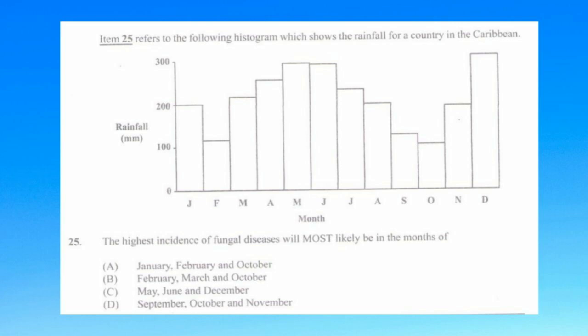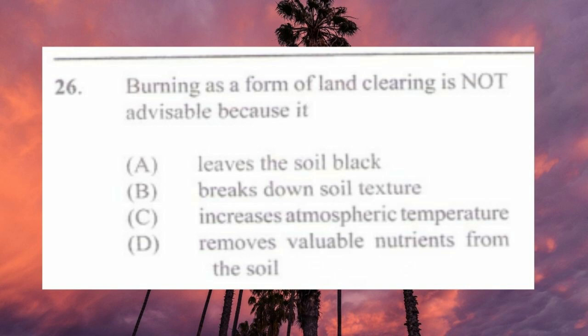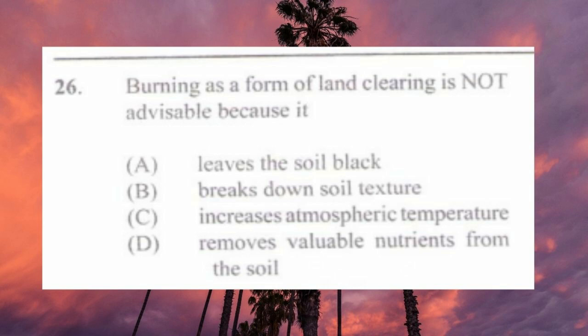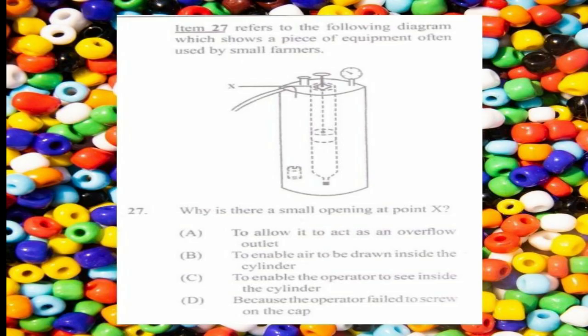Question number twenty-six: burning as a form of land clearing is not advisable because it a) leaves the soil black, b) breaks down soil texture, c) increases atmospheric temperature, d) removes valuable nutrients from the soil. The answer is b) breaks down soil texture. When you burn, the organic matter is destroyed, and when the organic component of soil is destroyed the texture is greatly affected.